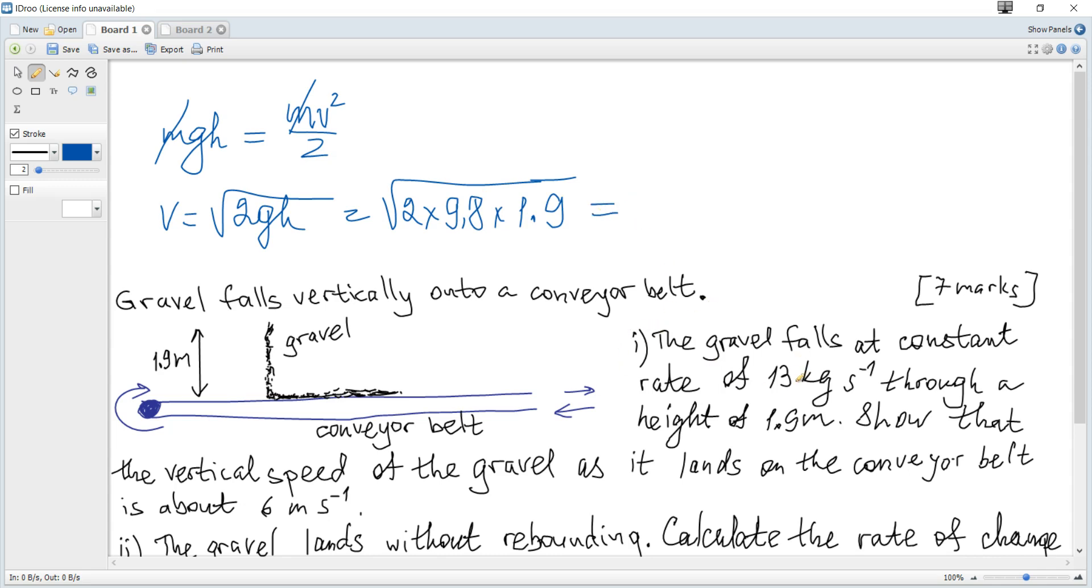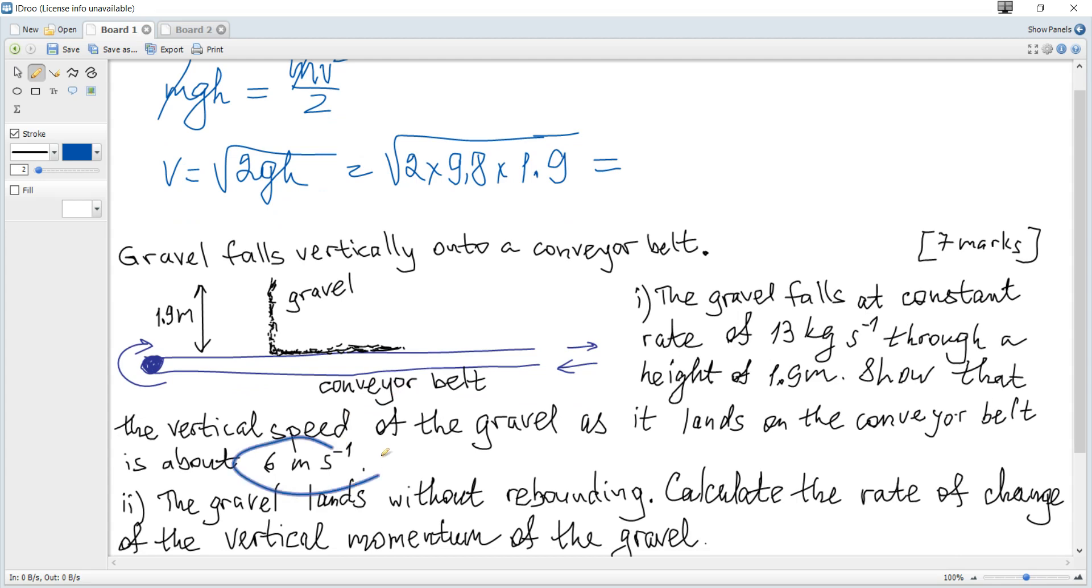Notice that if the question is to show and the answer is given, if you just write 6, it will not be correct. Your answer must be at least one more significant figure or decimal place. So, you should write 6.1 or let it be 6.11 meters per second.